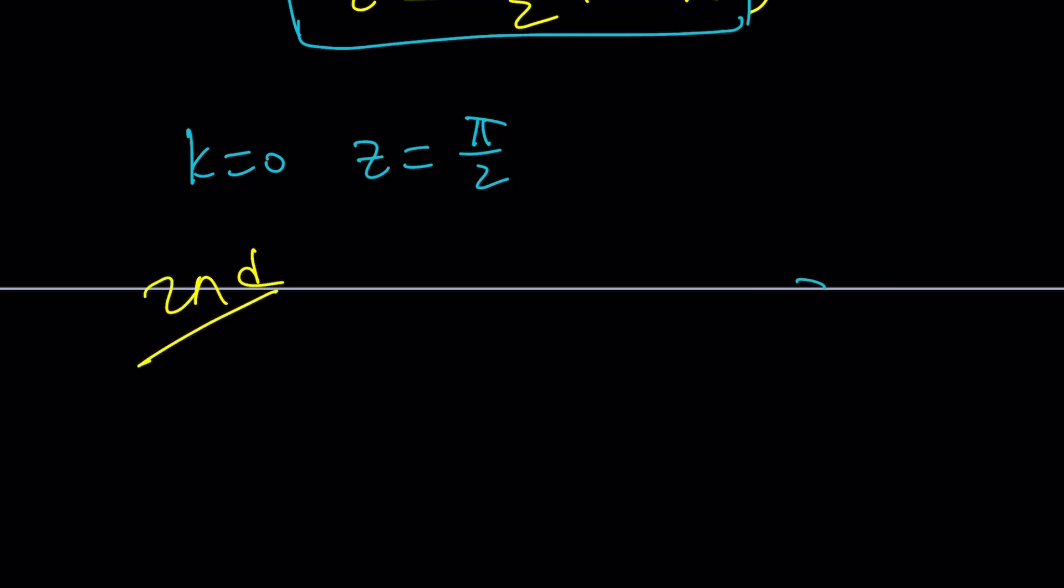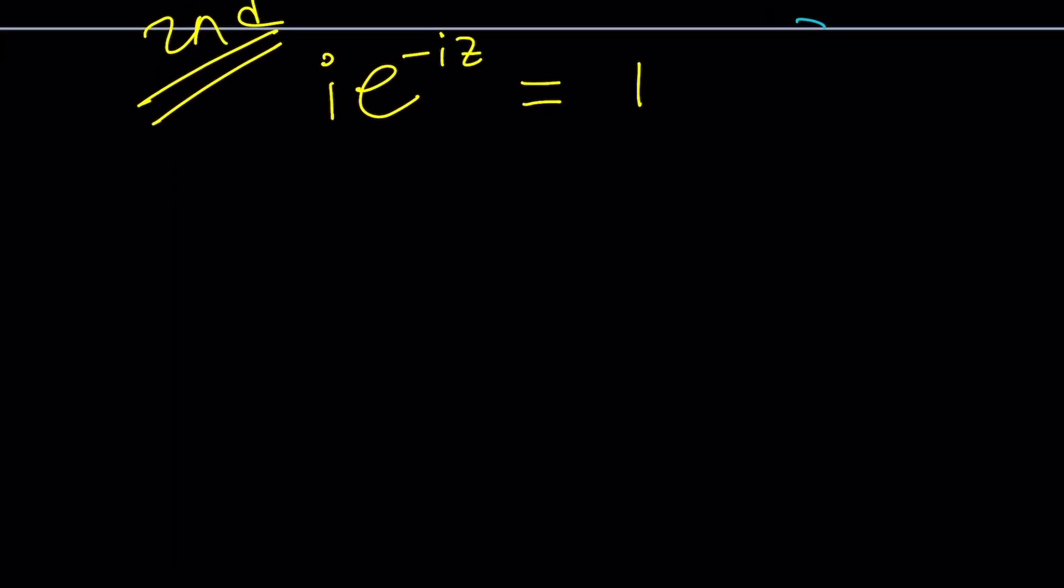So, for the second method, let me start with the original problem. i times e to the negative iz equals 1. Here's what I'm going to do. I'm going to multiply both sides by negative i. You could also divide by i, which is the same thing, by the way. I mean, let's do it. No big deal. Divide by i, and then you end up with this. But then, you want to, you know, turn this into something nicer. Multiply by negative i, and this becomes e to the negative iz equals, this becomes 1 because negative i squared, and this becomes negative i. Now, how do you solve this?